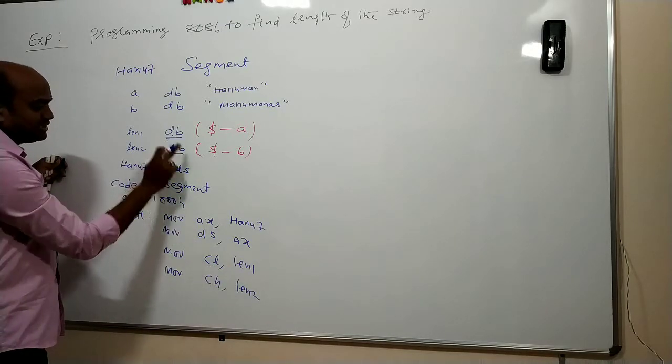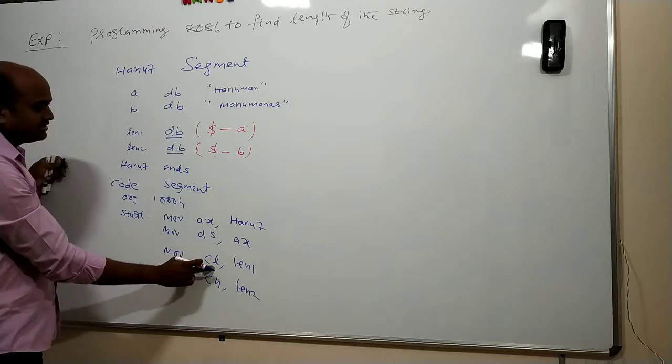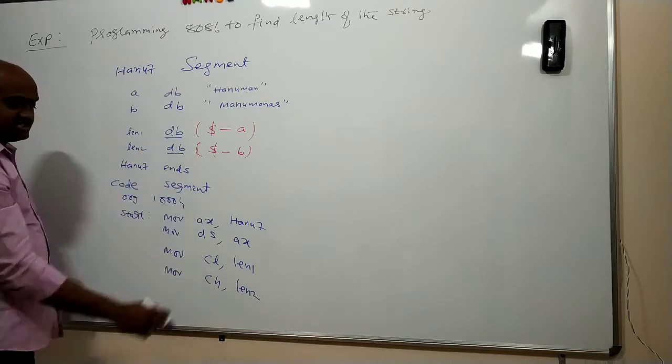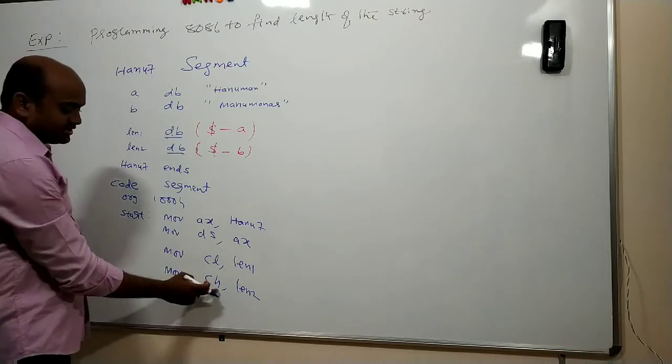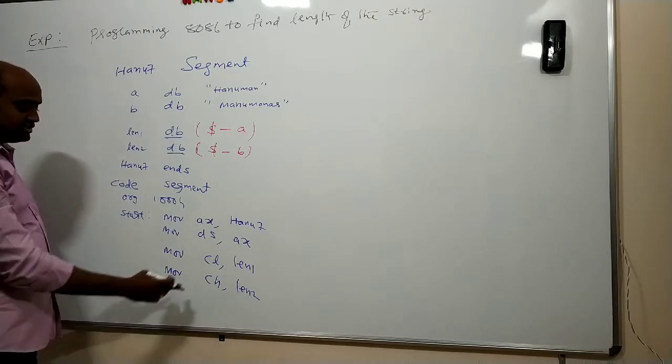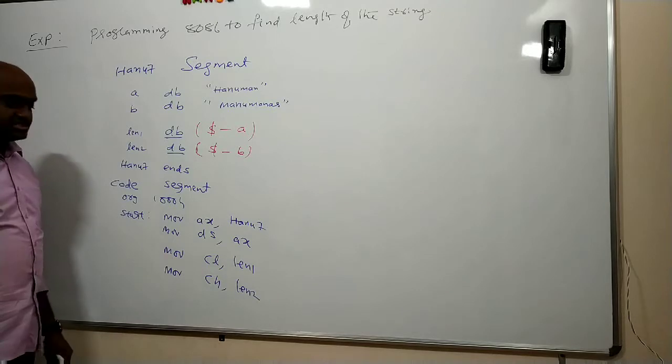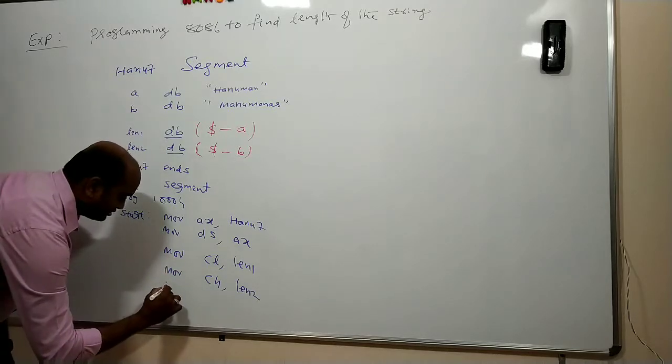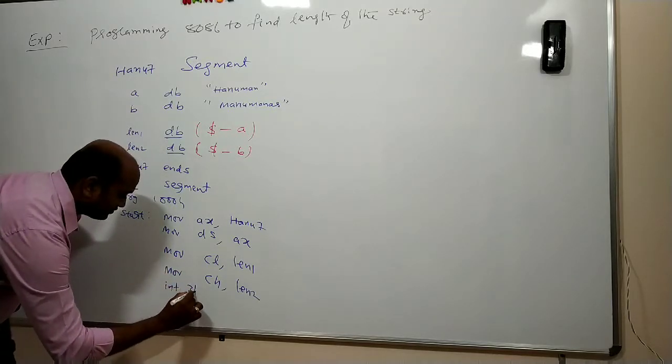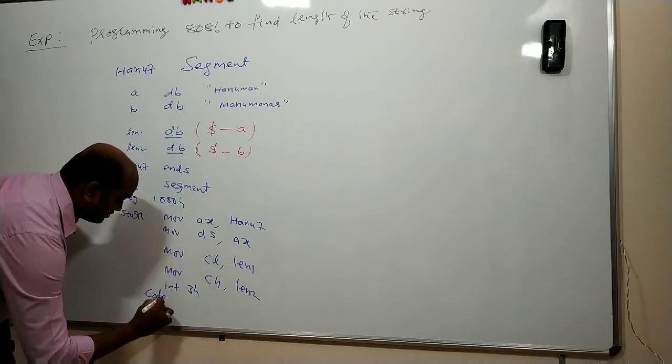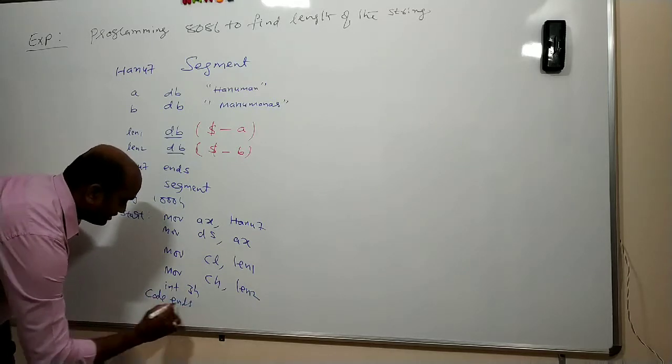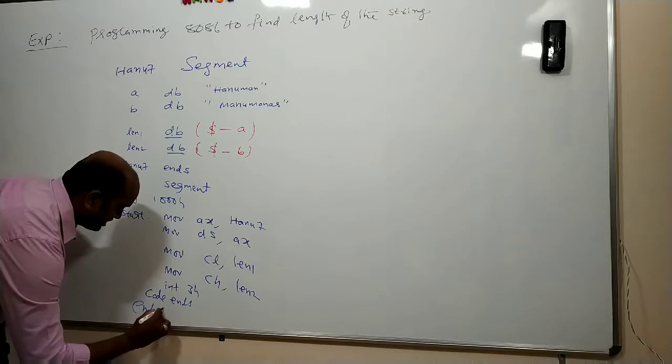If this is DW, then I have to use CX. Because it is DB, I used CL itself. CL is an 8-bit register. Similarly CH is an 8-bit register. So I got the result in CX register. So our program is done. So write int 3H. Then code ends and then end start.